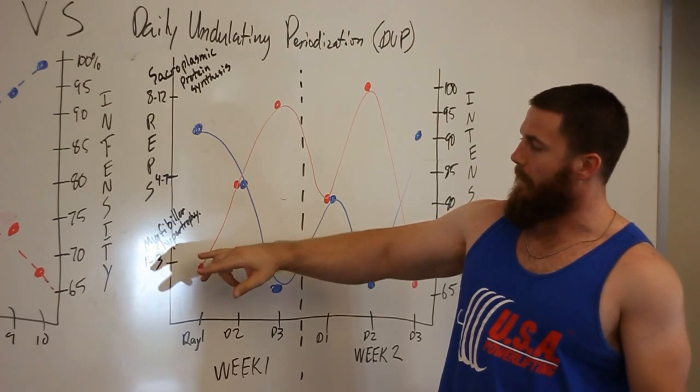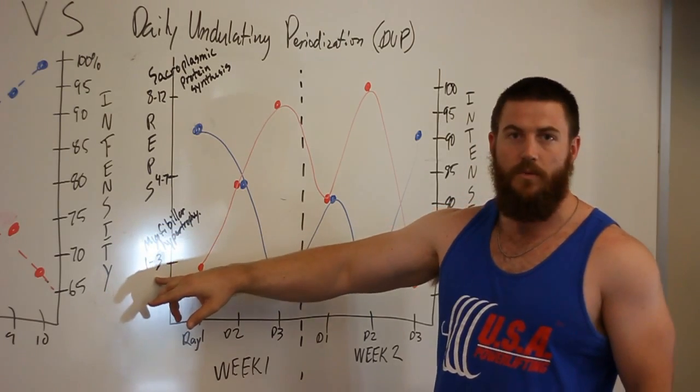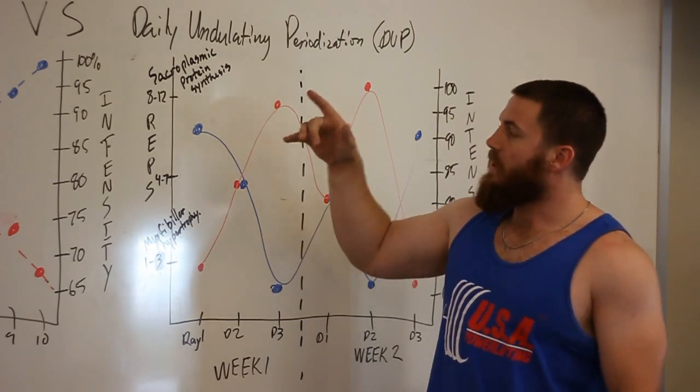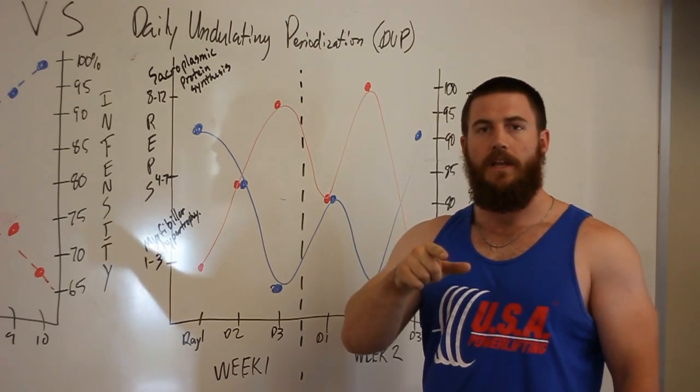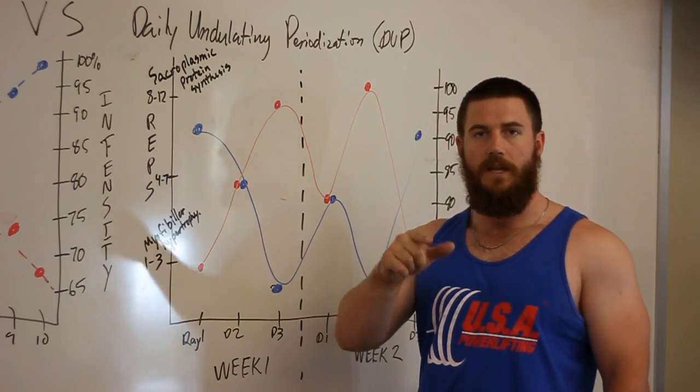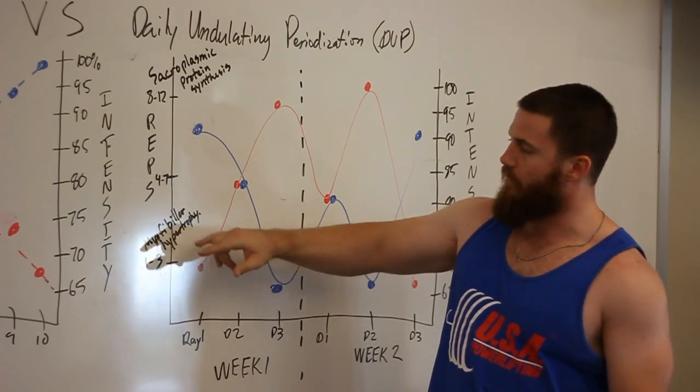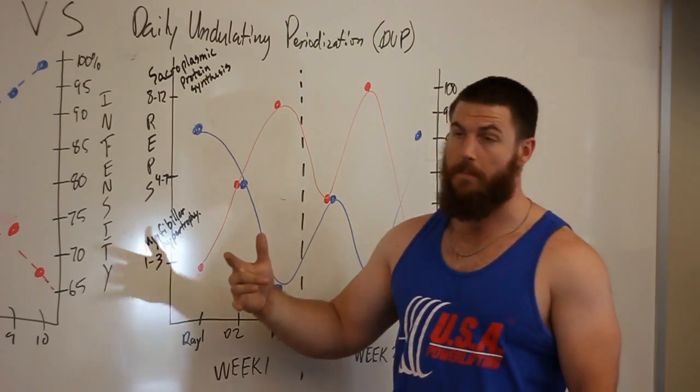Now you're going to get myofibular hypertrophy from the lower rep ranges, which is important, but you need to have both. And daily undulating periodization gives you both, whereas linear periodization really focuses on the myofibular hypertrophy. Here's what I mean.